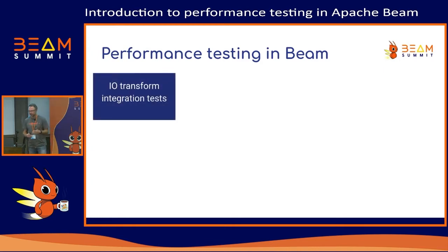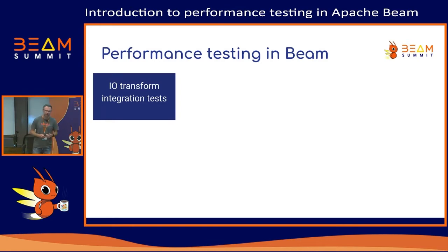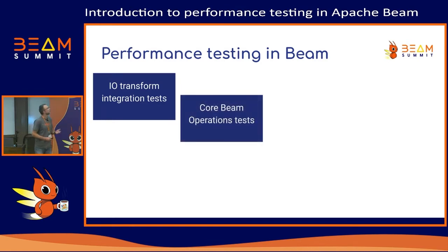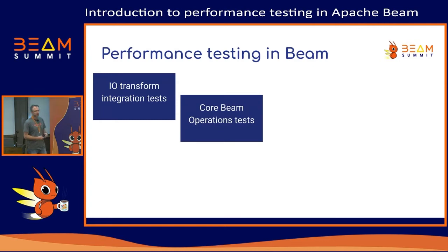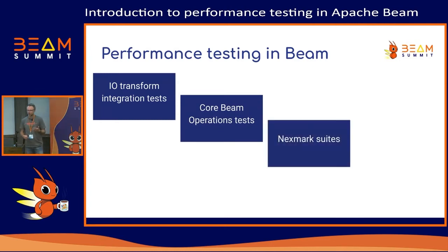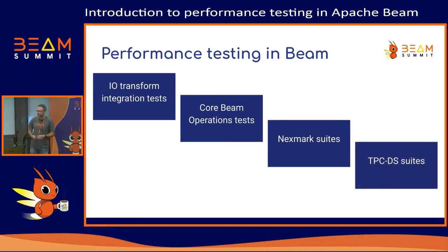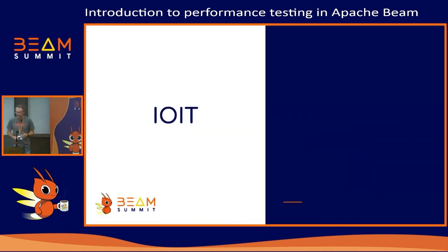We have four different blocks or entities in Beam for performance testing and benchmarking. First is IO transform integration tests, second is core Beam operation tests, third is the Nexmark benchmark suite, and the last one is the TPCDS suite, which is also a benchmark. We will talk about every one of these in detail.